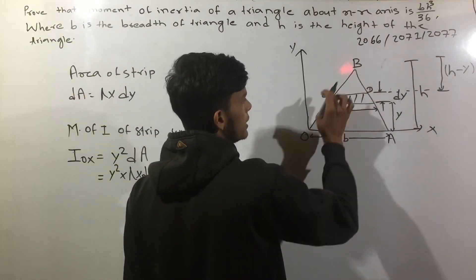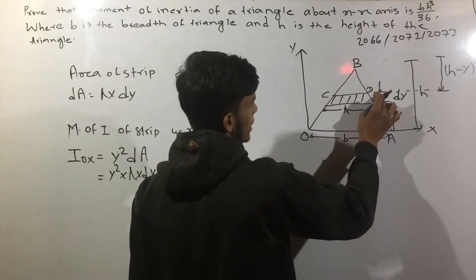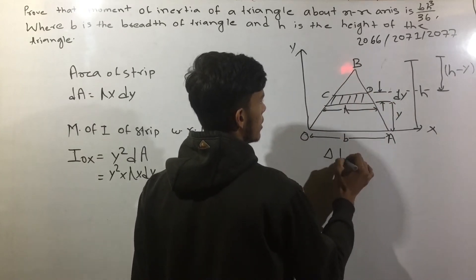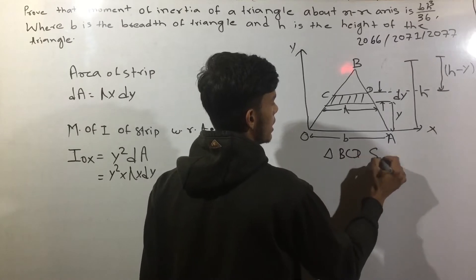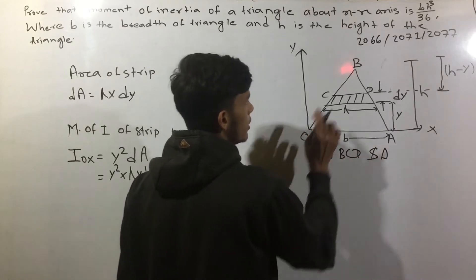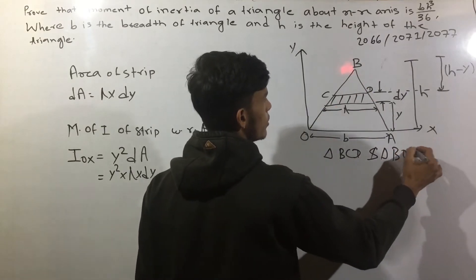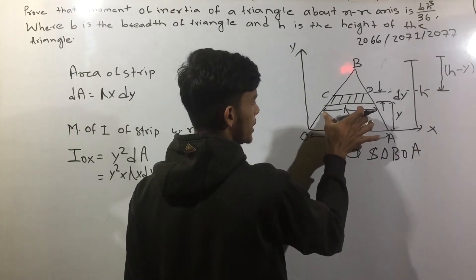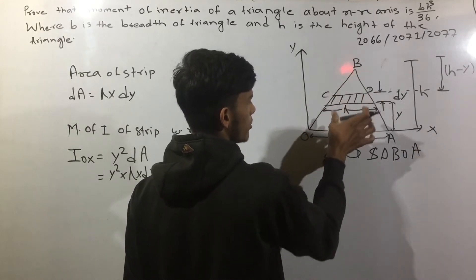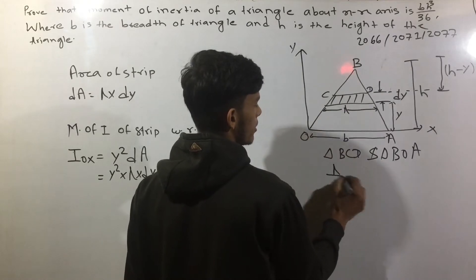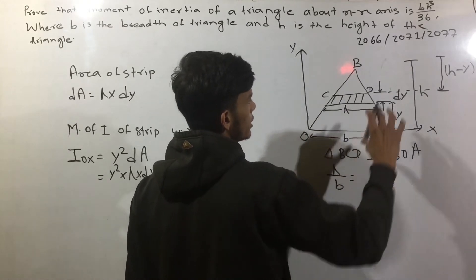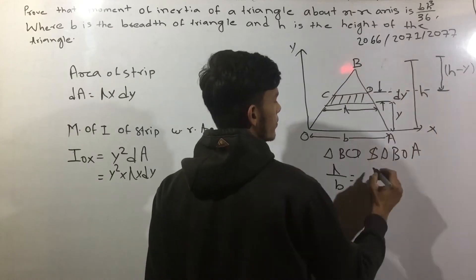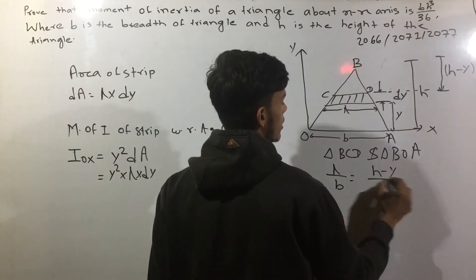Triangle BCD and triangle BOA are similar triangles. Using the similarity: y over b equals y over the corresponding dimension.